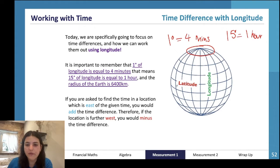We also know the radius of the earth is 6400 kilometers. If you're asked to find the time in a location which is east, you would be adding, and if you're asked to find something that's west, you're subtracting. Think of it as Australia, which is ahead of South Africa or Egypt.